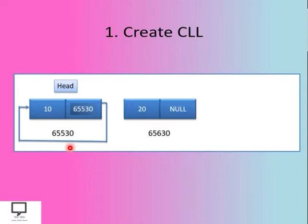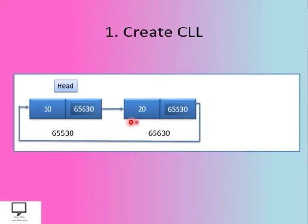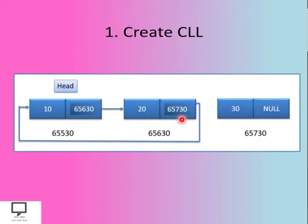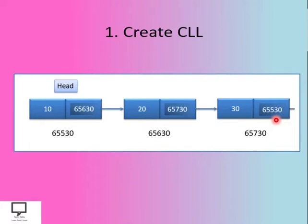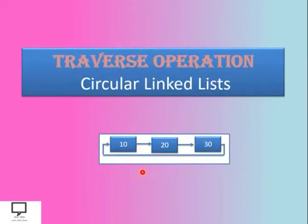Suppose we want to add one more node — we create the node and update the head node's address field to point to the newly created node, forming a logical link between the two nodes. At the end, instead of null, we paste the address of the first node to form a circular link. Adding a third node follows the same steps: update the previous node's next field to the new node, and point the new node's next field back to the head node to form a circular link.